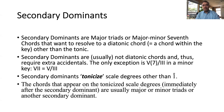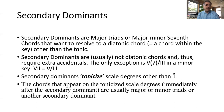So what are secondary dominants? They are major triads or major-minor seventh chords that want to resolve to a diatonic chord — a chord within the key — other than the tonic. So in this example, we had a V7 resolving to II. Secondary dominants are usually not diatonic chords and thus require extra accidentals. The only exception is the V of III or V7 of III in a minor key, and you may have used the uppercase Roman VII for that chord, but really it functions as V of III.